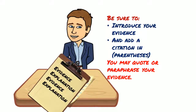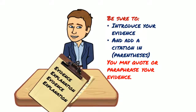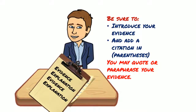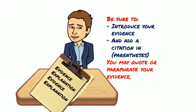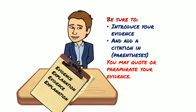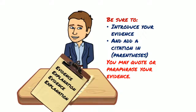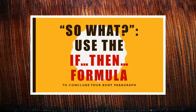The next step is to add two pieces of evidence with an explanation for each. Be sure to introduce your evidence — you might start by saying 'for example' or 'in the political cartoon,' and then add a citation in parentheses after each piece of evidence. For your evidence, you may quote or paraphrase from your documents.